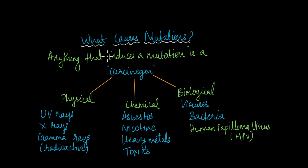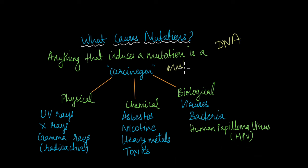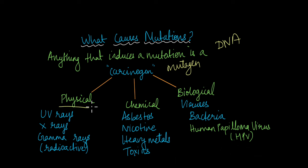Anything that induces a mutation in the DNA in any of the genes is known as a carcinogen or a mutagen. There are three different types of mutagens or carcinogens that are often involved in the development of cancer: physical, chemical, and biological carcinogens.